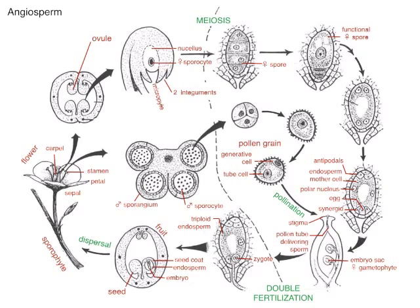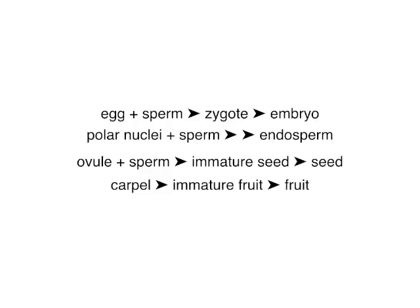So I've made this little poem for you. The poem reads: eggs plus sperm make zygotes that grow up to be embryos. Polar nuclei plus the other sperm nucleus grow up to be endosperm.